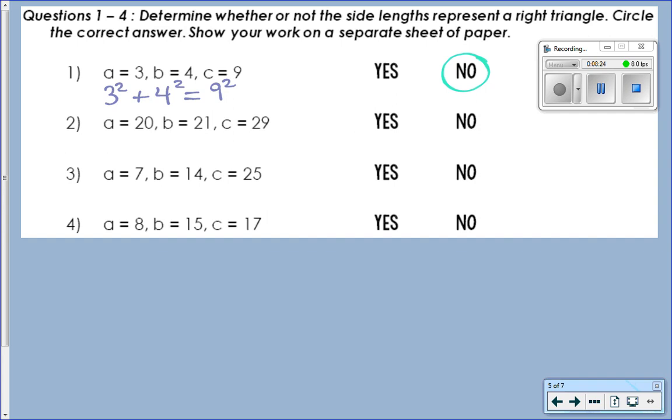No. Okay, I'll give you about a few more minutes to do 2, 3, and 4 and determine if those side lengths create a right triangle. Number 2, if you put in your calculator 20 squared plus 21 squared equals 29 squared, it is a right triangle. Number 3: 7 squared plus 14 squared equals 25 squared. Did that give you a right triangle? No, those three side lengths do not create a right triangle.